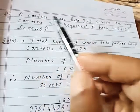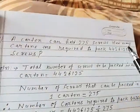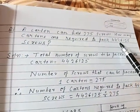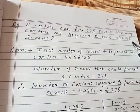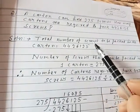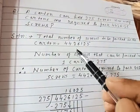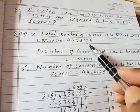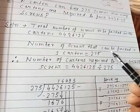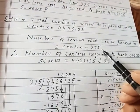14. A carton can hold 275 screws. How many cartons are required to pack 4426125 screws? Solution. Total number of screws to be packed is equal to 4426125. Number of screws that can be packed in one carton is equal to 275.